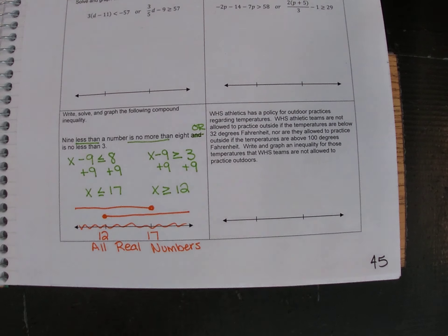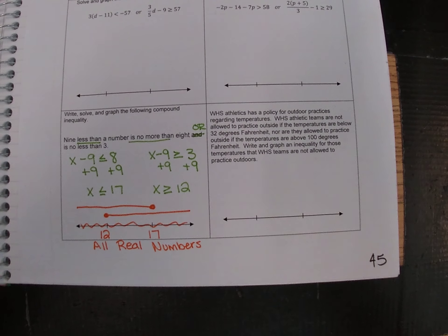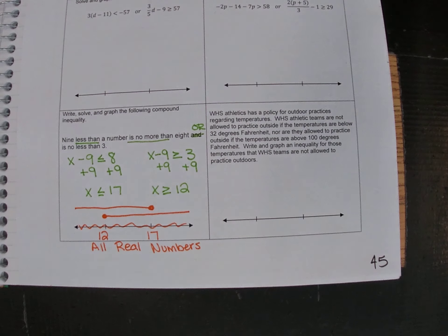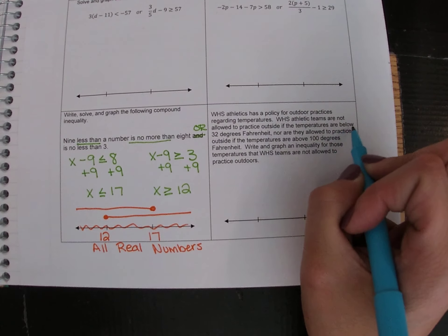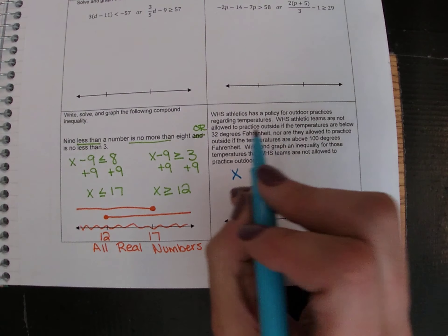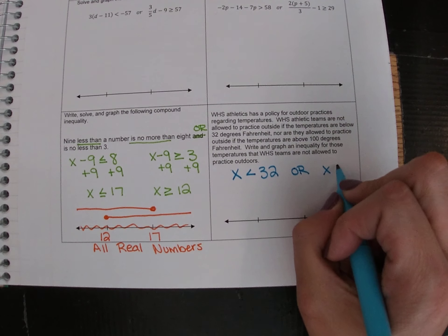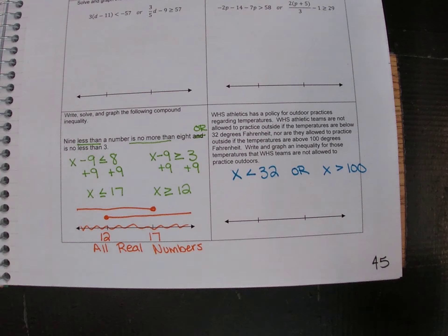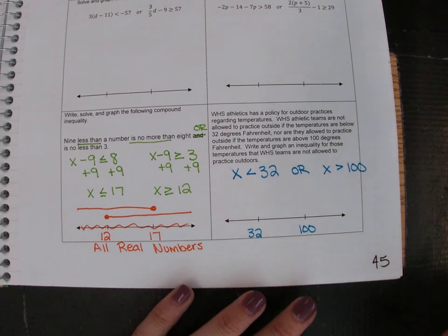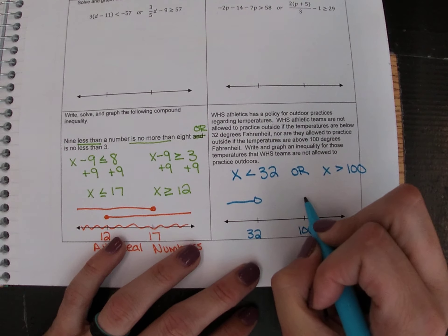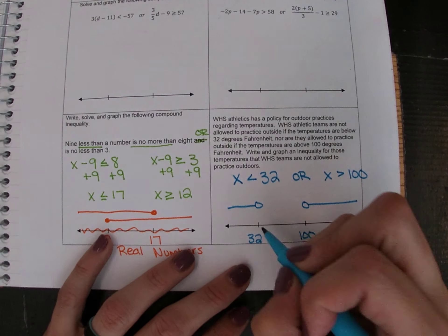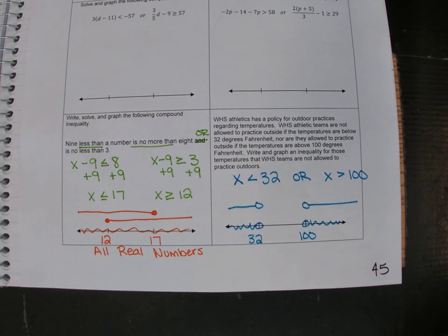Last problem: WHS Athletics has a policy for outdoor practices. Teams are not allowed to practice outside if temperatures are below 32 degrees, nor if temperatures are above 100 degrees. We write: temperature less than 32, or temperature greater than 100. On the number line: 32 is smaller on the left, 100 is larger on the right. Open circle into the left, open circle into the right — bring down where we see at least one, which is to the left of 32 and to the right of 100.